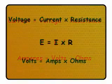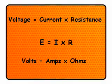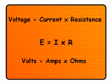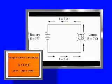Rearranging Ohm's law formula gives a formula for voltage. Voltage equals current multiplied by resistance, or you could say that volts equals amps multiplied by ohms. This formula will let you calculate the voltage across something if you know the current flowing through it and the resistance of it.